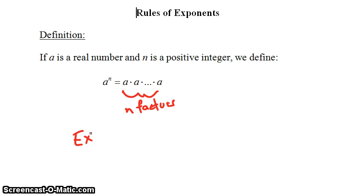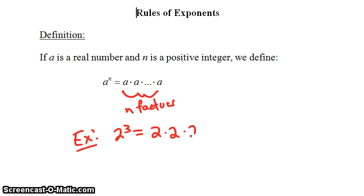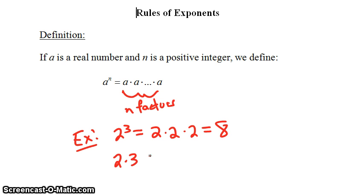As a quick example, 2 to the third power is equal to 2 times 2 times 2, with three factors, which turns out to be 8. Don't confuse 2 to the third power with 2 times 3. 2 times 3 is equal to 2 plus 2 plus 2, which is 6.